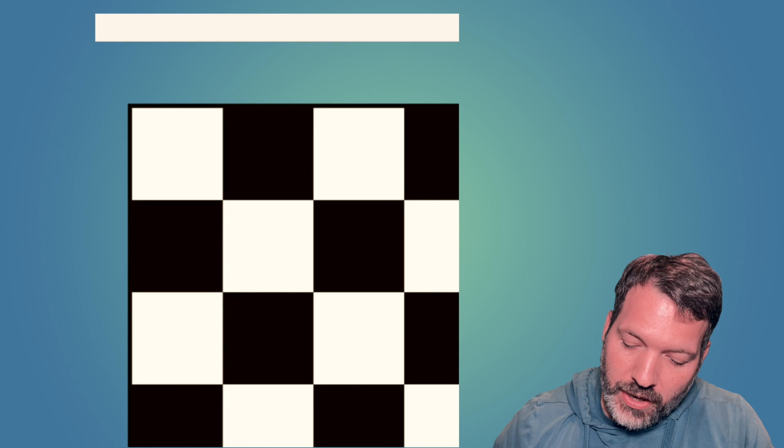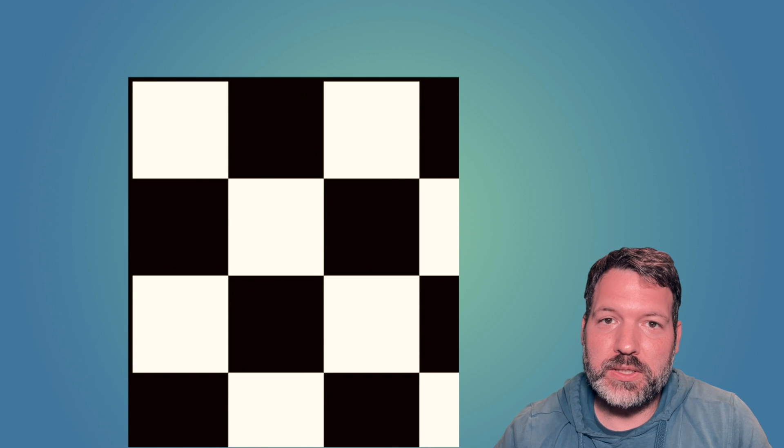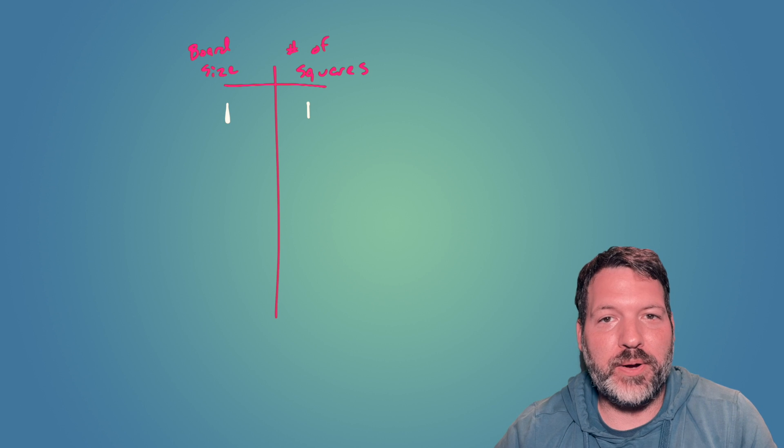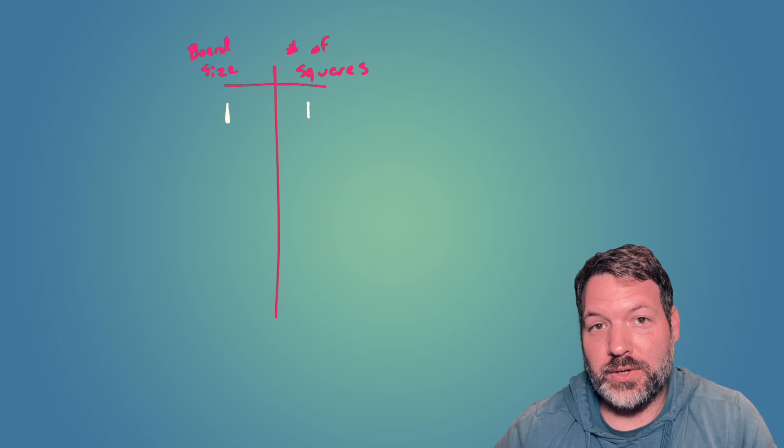One helpful strategy is to break it down into a smaller problem. Instead of considering a full 8x8 chessboard, consider something small, in fact, consider the smallest case possible, the 1x1 block. How many squares are there on the 1x1 block? The answer is 1. Let's write that down. So, for our simplest case scenario, a 1x1 chessboard, we have exactly one square.